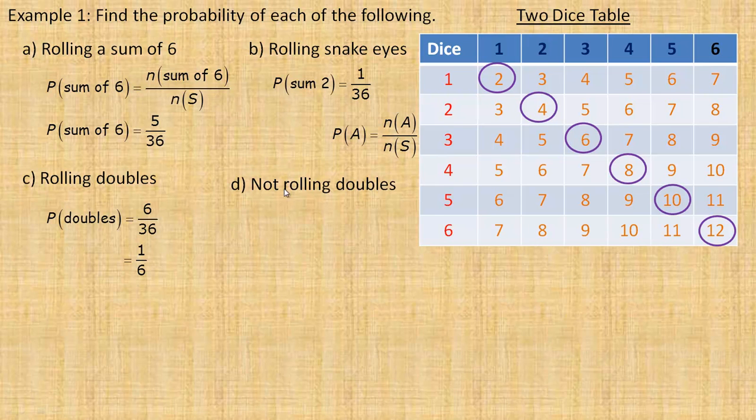Now, the probability of not rolling doubles, you could add them all up, so 1, 2, 3, 4, 5, 6, 7, 8, 9, 10, 11, 12, 13, 14, 15, and there would be 15 more up here. So the probability of not rolling doubles would be 30 out of 36. And you can divide both of those by 6 to get 5 out of 6.